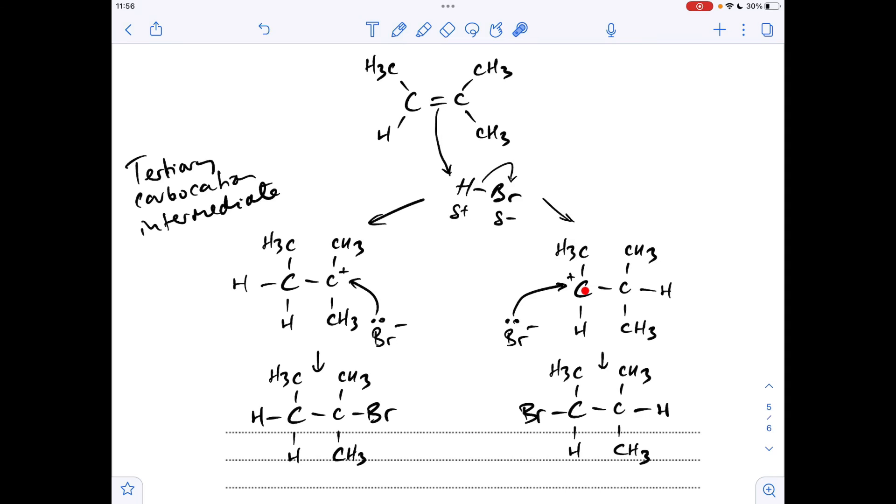Moving on to this one, so the C with the plus on is bonded to one, two carbons directly. So this is a secondary carbocation intermediate. So which one's going to form in the greater amount? Well, it's going to be from whichever of the intermediates is the most stable, and the answer is it's the tertiary one. So you're going to get more of this product forming because its carbocation intermediate is tertiary, which is more stable than this one, which is secondary.